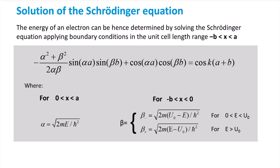If we apply the boundary conditions within such unit cell, we can solve the Schrödinger equation. The resulting solution includes the parameters alpha and beta, which are related to the energies in specific regions of the potential energy function. From this solution we can see that each value of k corresponds to a specific energy. Besides, to satisfy the relationship, the cosine of k times (a plus b) must assume a value in the range between minus 1 and plus 1.